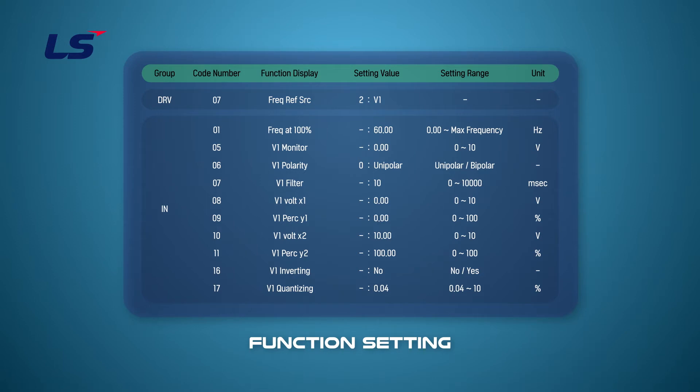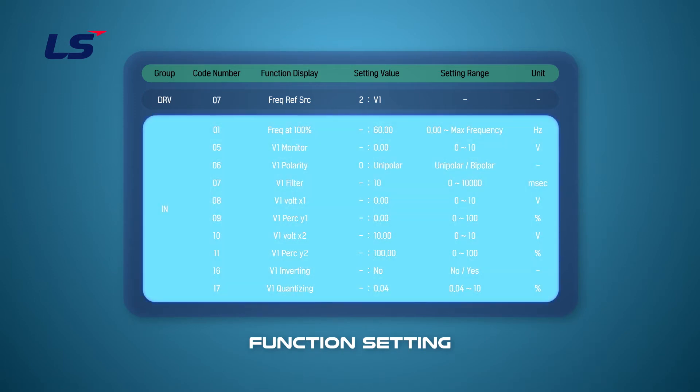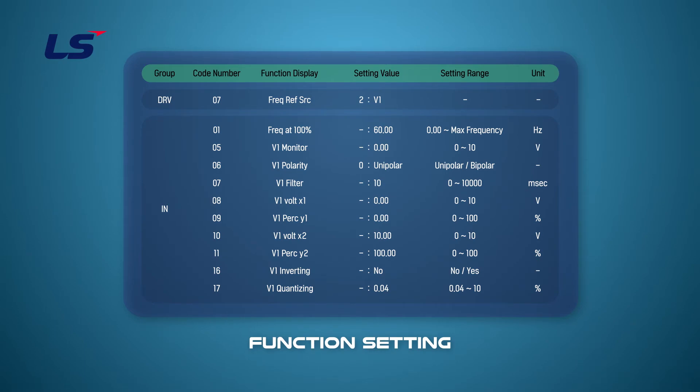Parameters related to analog input can be set in IN-group. First, set IN-group 6 to unipolar because we do not use the negative voltage now. If you want to use minus 10 volts to plus 10 volts, you can set bipolar.